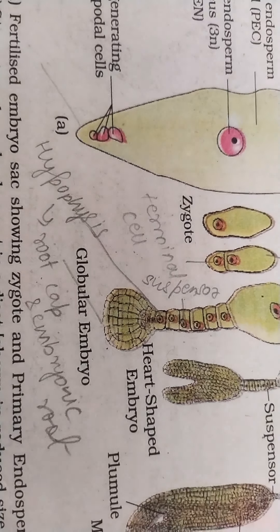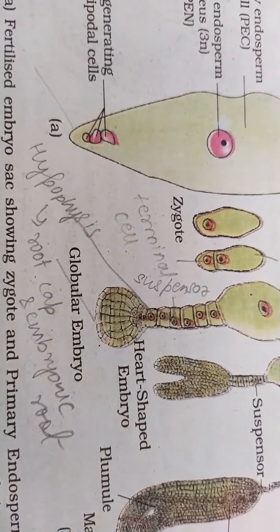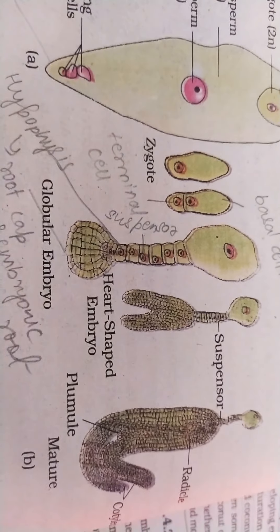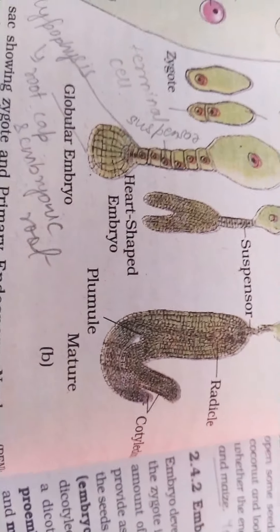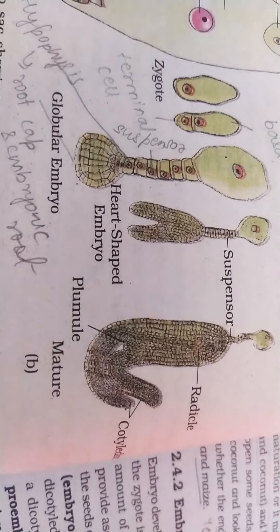The suspensor is attached to the heart-shaped embryo by hypophysis, which is going to make root cap and the embryonic root. Now this will turn into a heart-shaped embryo and then it will finally give rise to seed which will have cotyledon, radicle which will form root system, and plumule which will form shoot system.